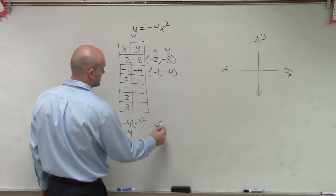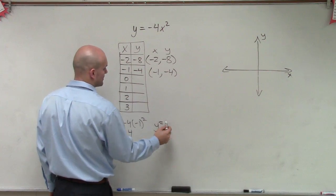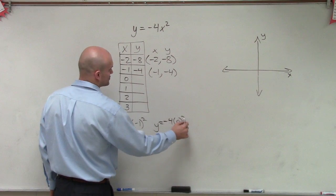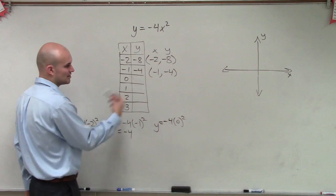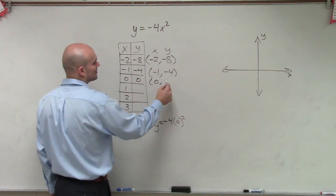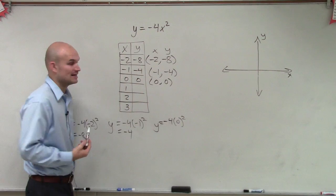Then I'll do negative 4 times 0 squared. Well, 0 squared is 0. 0 times negative 4 is 0. So again, we're going to have a quadratic with a point at the origin.